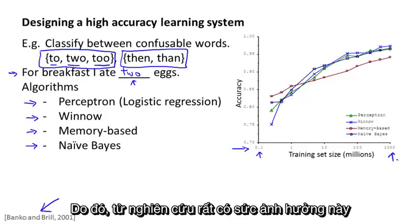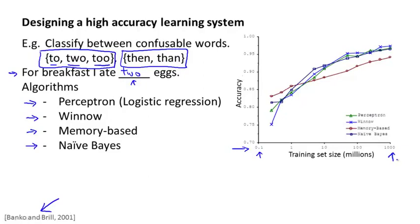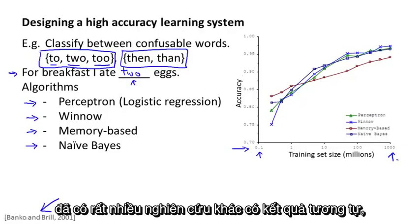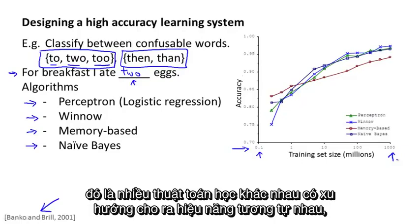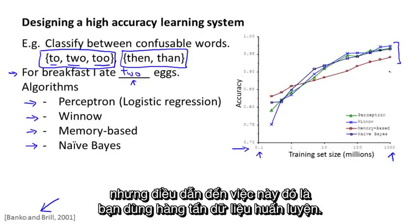So since this original study, which is very influential, there's been a range of many different studies showing similar results that show that many different learning algorithms can sometimes, depending on the details, can give pretty similar ranges of performance.